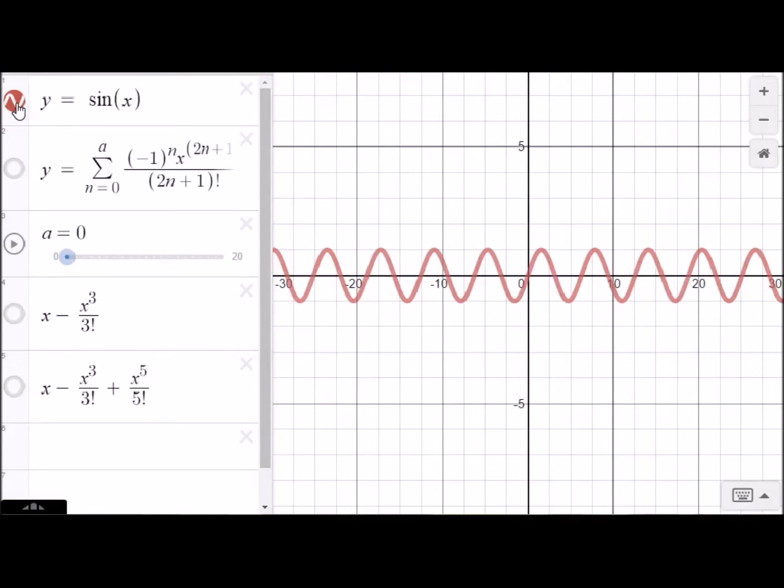So here I've got my graph. This is y equals sine x that I have here. Notice if you look at the second thing here, this was what we said was going to be the Taylor series expansion for y equals sine x. And what I'm going to do is, so a just represents how far out we're going in the series to approximate.